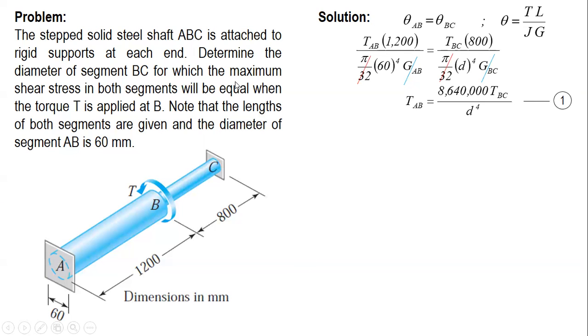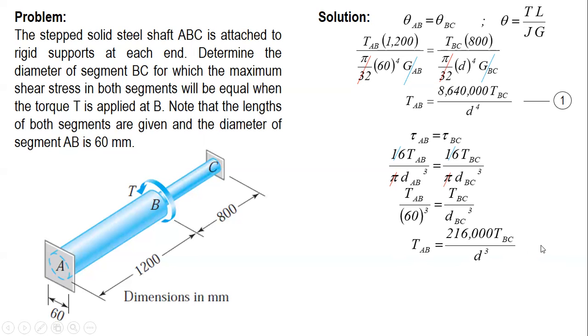The other condition is the maximum shear stress in both segments will be equal. So stress of AB equals stress of BC. The formula for stress for solid shaft is 16T over pi D cube. So cancel 16 as well as pi. For AB we will replace this by 60, and then cross multiply to the right side. We have an expression of TAB. This is our equation 2.